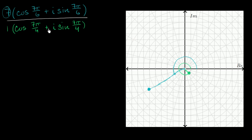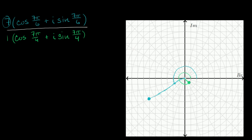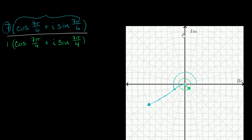If you try to divide it straight up, it can get quite hairy. The way to tackle it is to write it in another form. What might have jumped out at you is that exponential form would be much simpler. We convert this to exponential form by recognizing that this expression comes straight out of Euler's formula — it's e to the seven pi over six i. So the entire top complex number can be rewritten as seven e to the seven pi over six i.